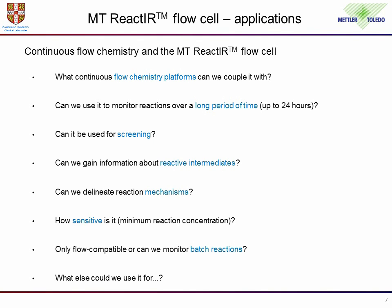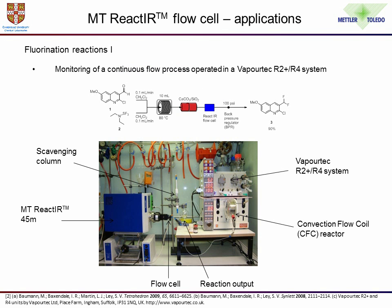I'll now hand over to Catherine Carter, one of my students, who will tell you about some of the work she's been doing in terms of applications of the new equipment. The first application we want to discuss is the use of the IR flow cell to gain information about product dispersion, one of the main problems alluded to earlier. The setup required for this was to attach the flow cell to the output of a flow chemistry system, as you can see in the schematic diagram and accompanying photo.